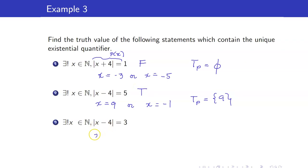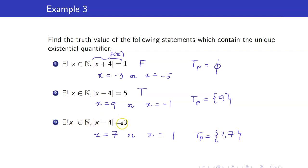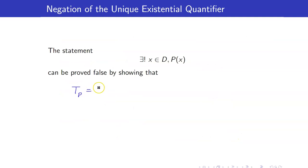For the last example, solving gives x = 7 or x = 1, so the truth set contains {1, 7} — two elements can satisfy this property. Therefore this unique existential statement is false. This example shows how to establish that a unique existential statement is false: either show the truth set is empty, or show the truth set has more than one element.